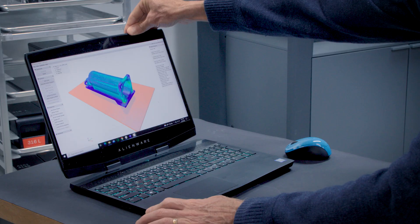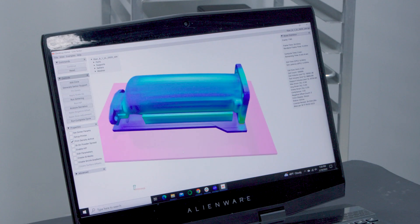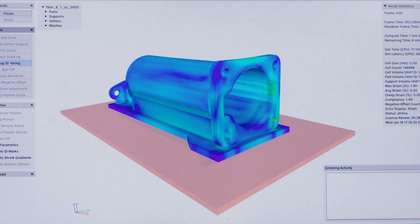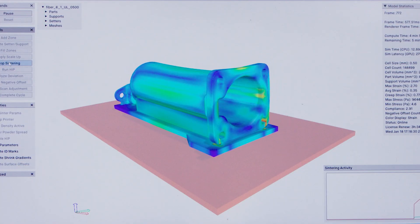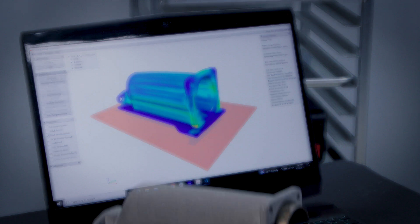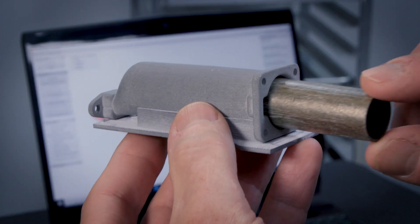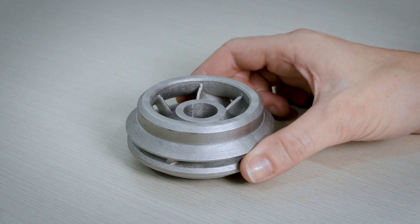Desktop Metal offers sintering deformation software that enables us to design parts in a way that we get the outcome we want after sintering. We really now have very useful scientific analytical tools that enable successful outcomes.